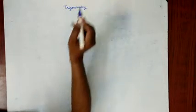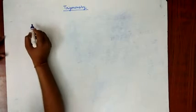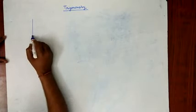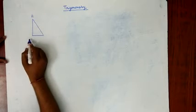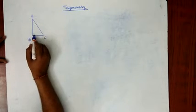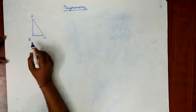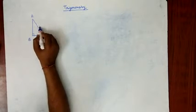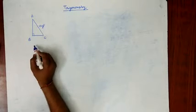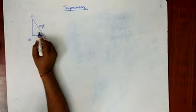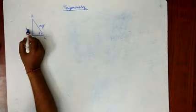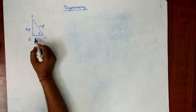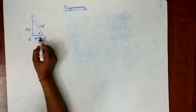Trigonometry is completely based on right angle triangles in 10th class standard. We have a triangle ABC right angled at B. The side opposite to the right angle, AC, is the hypotenuse. We select an acute angle theta, and the side opposite to theta, AB, is called the perpendicular. The remaining side is called the base of this triangle.